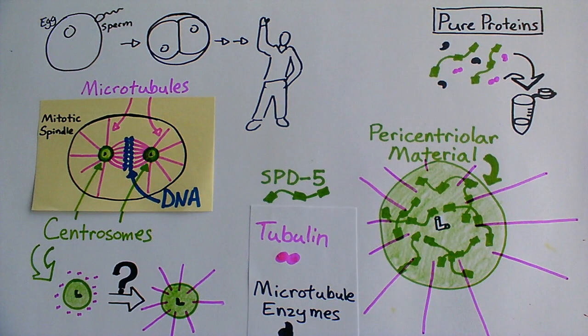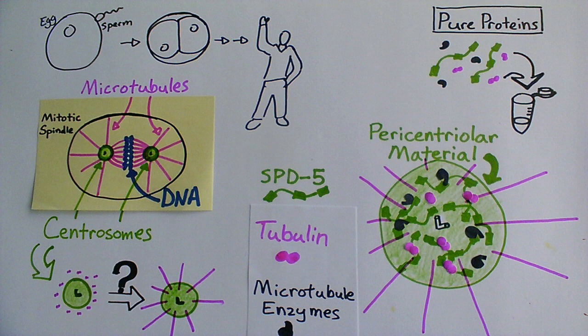Just like in a sponge, the scaffold is fairly stable, while the concentrated proteins inside are liquid-like and can move around freely within the sponge.